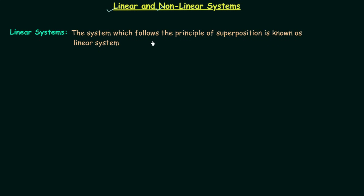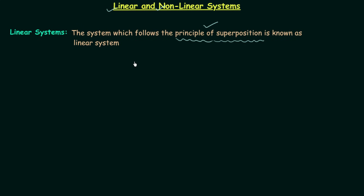The system which follows the principle of superposition is known as a linear system. You can write down this definition: the system which follows the principle of superposition is known as a linear system, and non-linear systems are those systems which do not follow the principle of superposition. The important thing is to understand what is the principle of superposition. This principle of superposition is the sufficient and necessary condition to prove the linearity of the system.